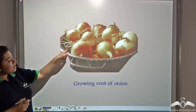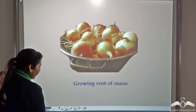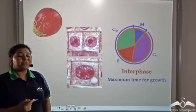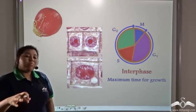These are the growing roots of onion. If you take one such growing root and observe under the microscope, you will see a number of cells.